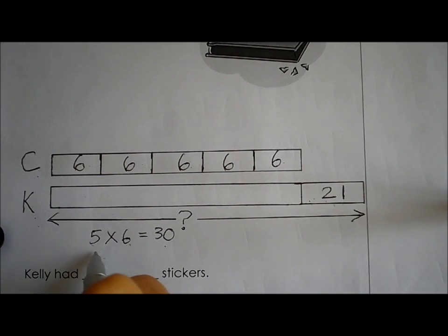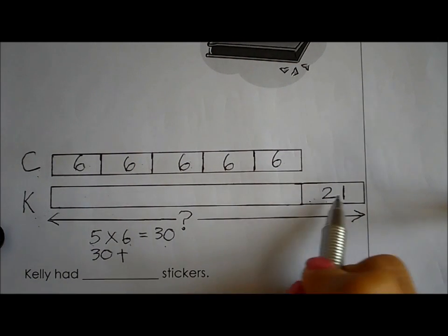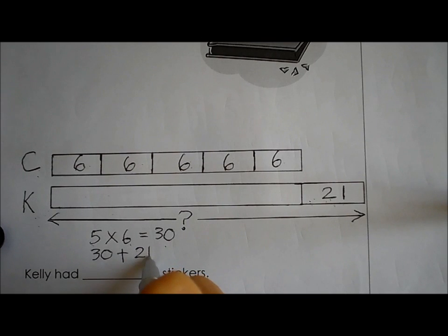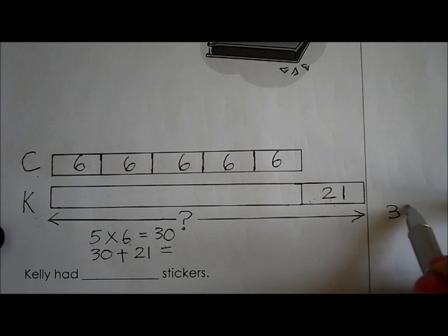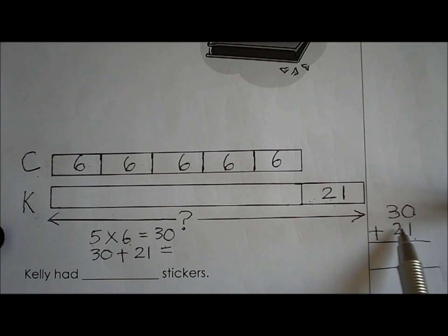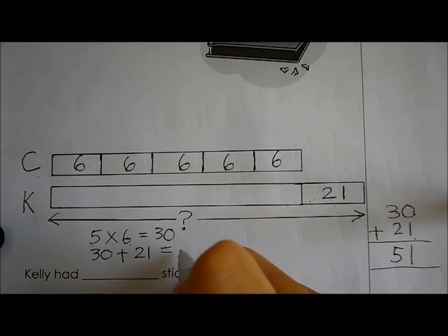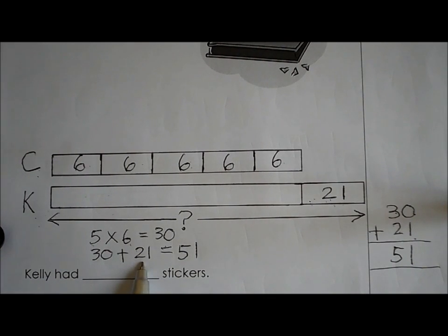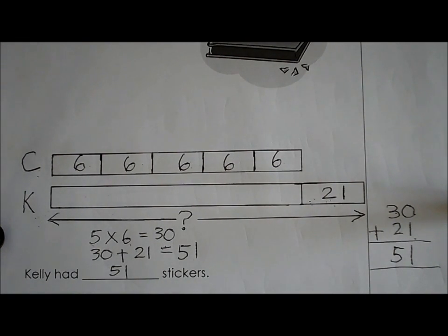Kelly had 21 stickers more than Celine, so 30 plus 21. Working it out: 0 plus 1 is 1, 3 plus 2 is 5, giving 51. So 30 plus 21 equals 51. Therefore Kelly had 51 stickers.